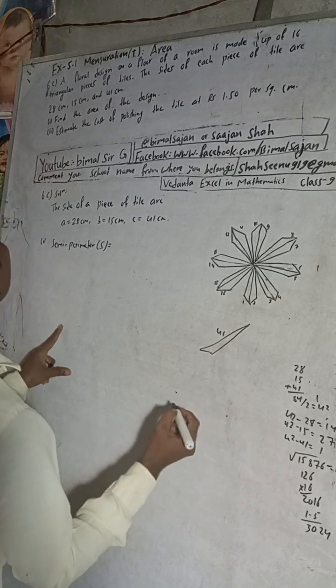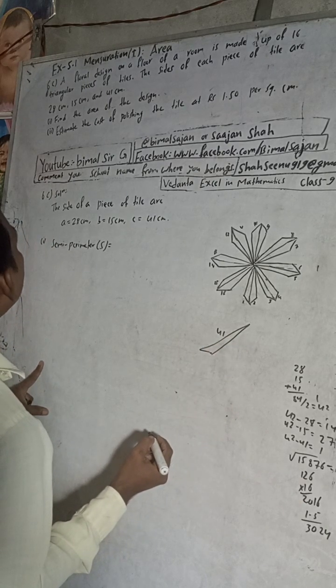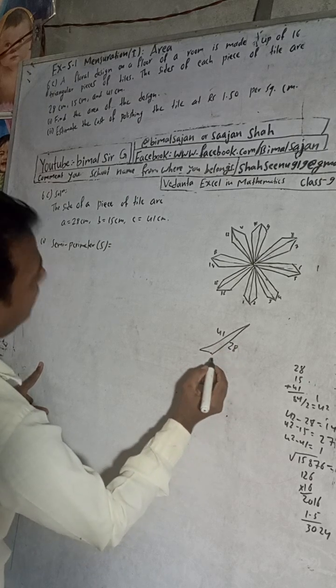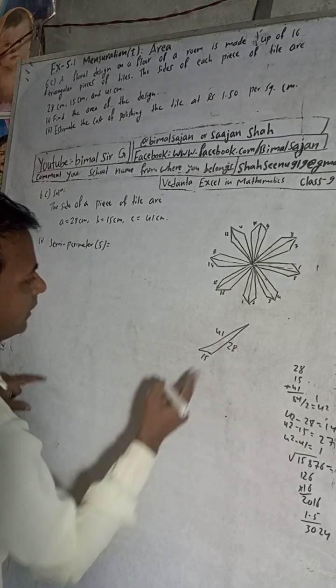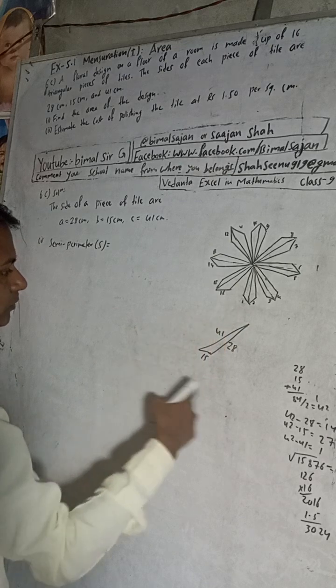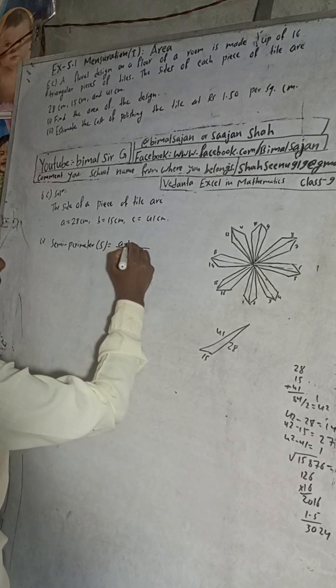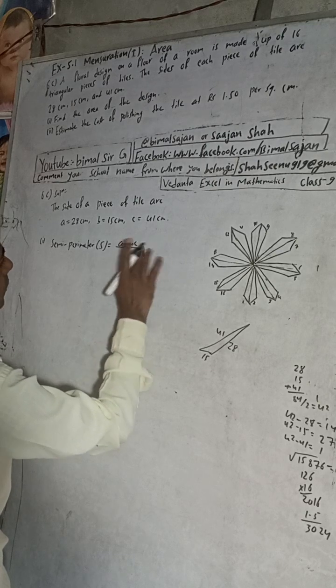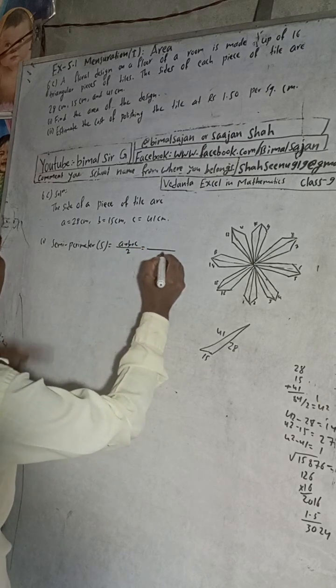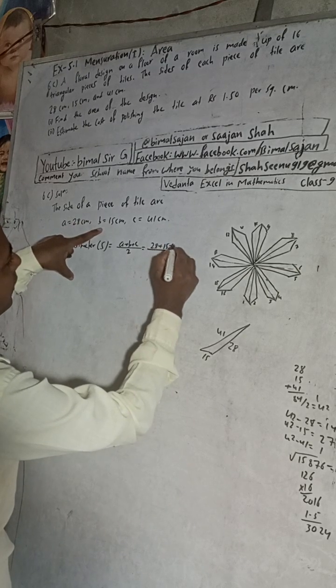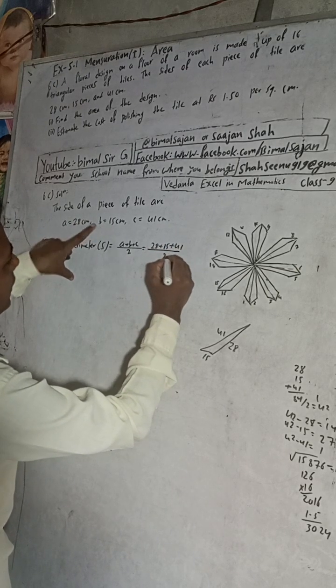And other is 28, and this is our 15. This is a triangle shape. Now to find the semi-perimeter, we have to add here A plus B plus C by 2, is equal to 28 plus 15 plus 41 by 2.